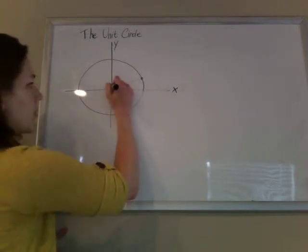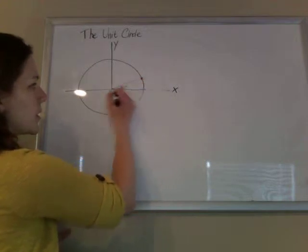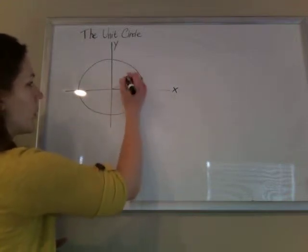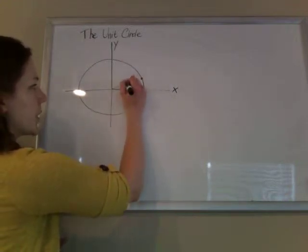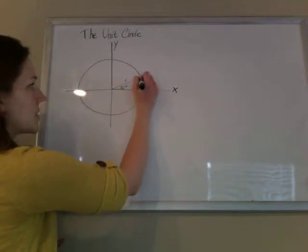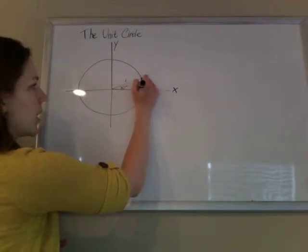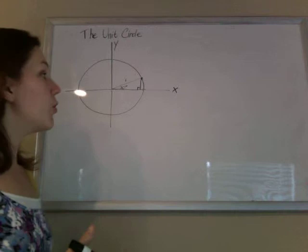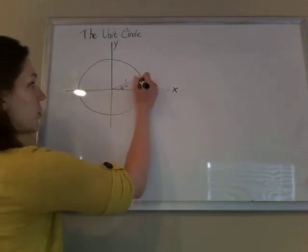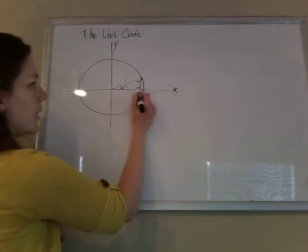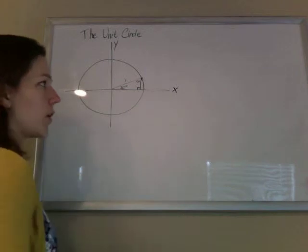Now, since the radius of my circle is 1, clearly it's not a full 1 out or a full 1 up, but I can label this radius 1 and then make a triangle. Because I know my 30-60-90 triangle ratios, I can therefore determine how far over and how far up I am.